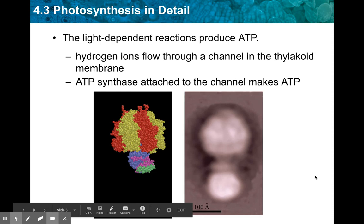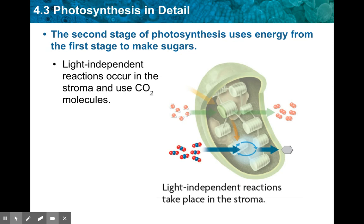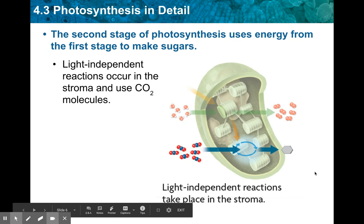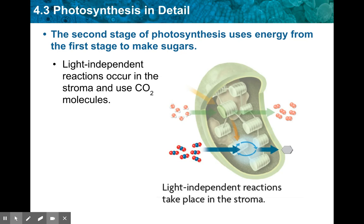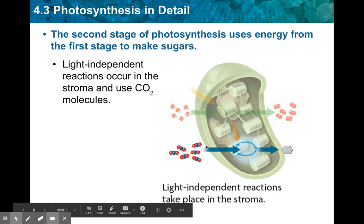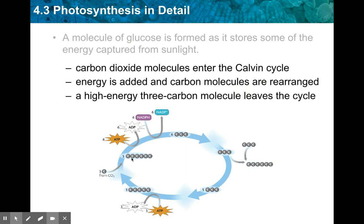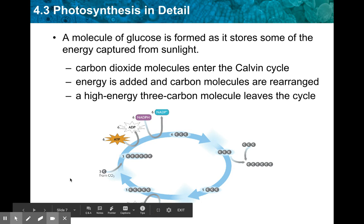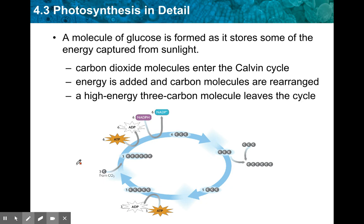This slide outlines what ATP synthase looks like. Now we get into the second stage of photosynthesis — the light-independent reactions — which use energy from the first stage to make sugar. The main purpose of photosynthesis is to create carbon molecules to store sugar. These reactions do not need light to occur but do need carbon dioxide, and they occur in the stroma. A molecule of glucose is formed as it stores some of the energy captured from sunlight. Let's walk through this graphic, which can be a little confusing.